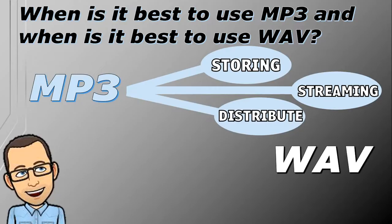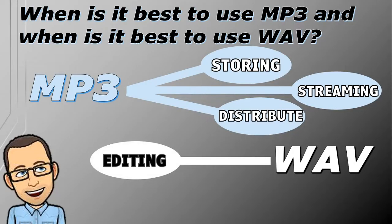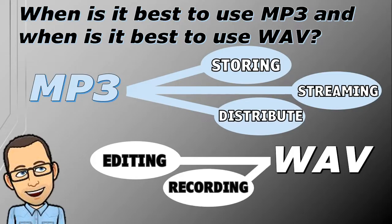WAV is used when editing audio because MP3s can't be directly edited — they have to be converted to WAV first. Also, when you're recording audio, WAVs are better. This is because it takes computer resources to decode an MP3 file for playback. If you're just playing a song on your phone, that's easy. But imagine a recording studio where you have more than 50 tracks of audio recording or playing back — that would slow down the process way too much to keep decoding MP3 files.